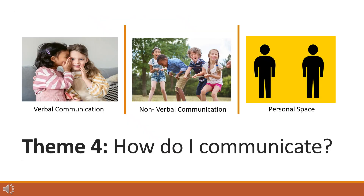The next theme looks at communication, including verbal and non-verbal communication, as well as personal space. In terms of verbal communication, it is important for a child with a visual impairment to learn to move their head towards the speaker when engaging in conversation, as well as develop listening skills, turn-taking and appropriate questioning. In terms of non-verbal communication, this may involve understanding tone of voice, different sounds and what that might mean, such as yawning, sighing or slamming a door.